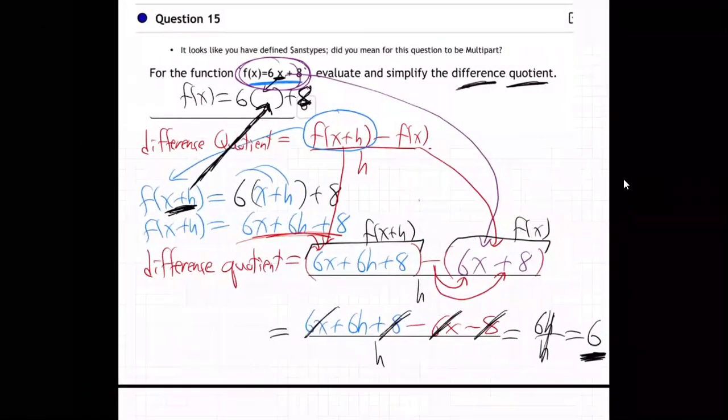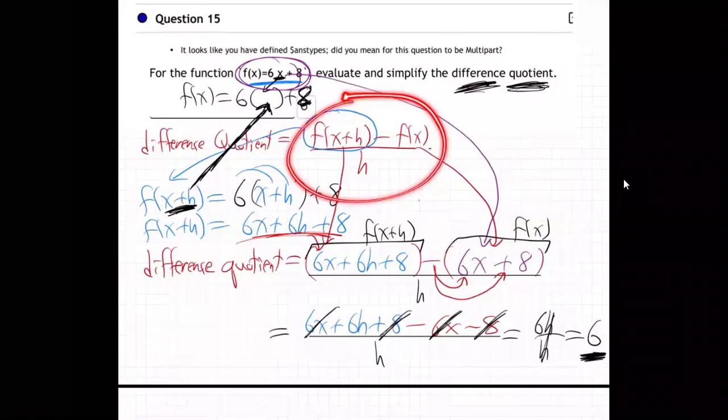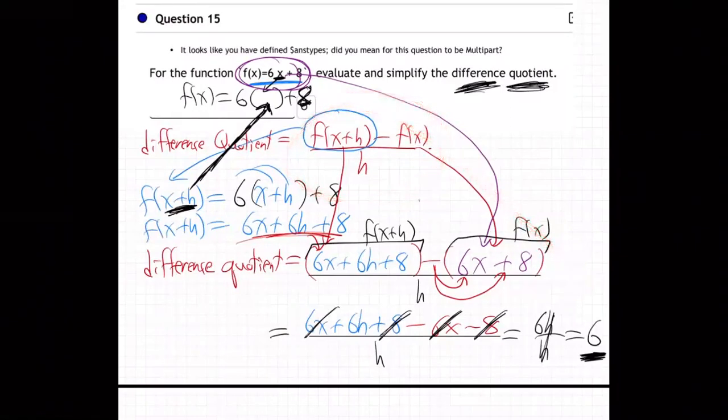So that is what they mean when they say find the difference quotient. It means this subtraction fraction right up here. This subtraction fraction difference quotient: f of x plus h minus f of x all over h. And it all simplifies down on that one to just be 6.